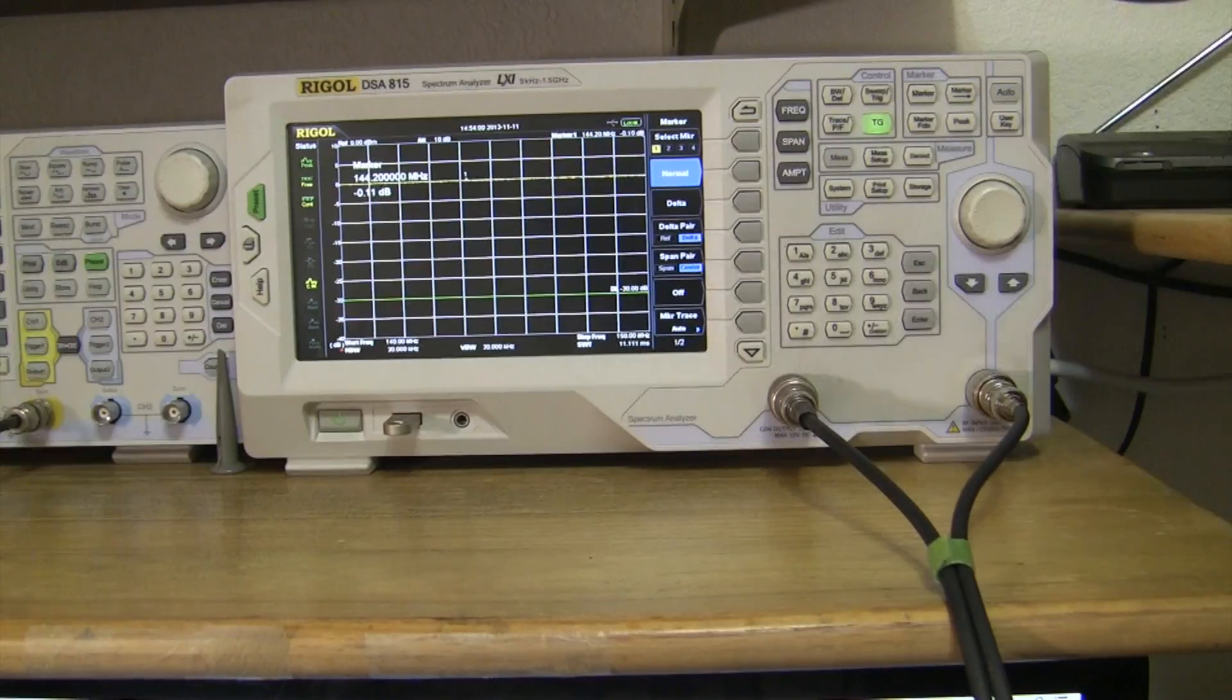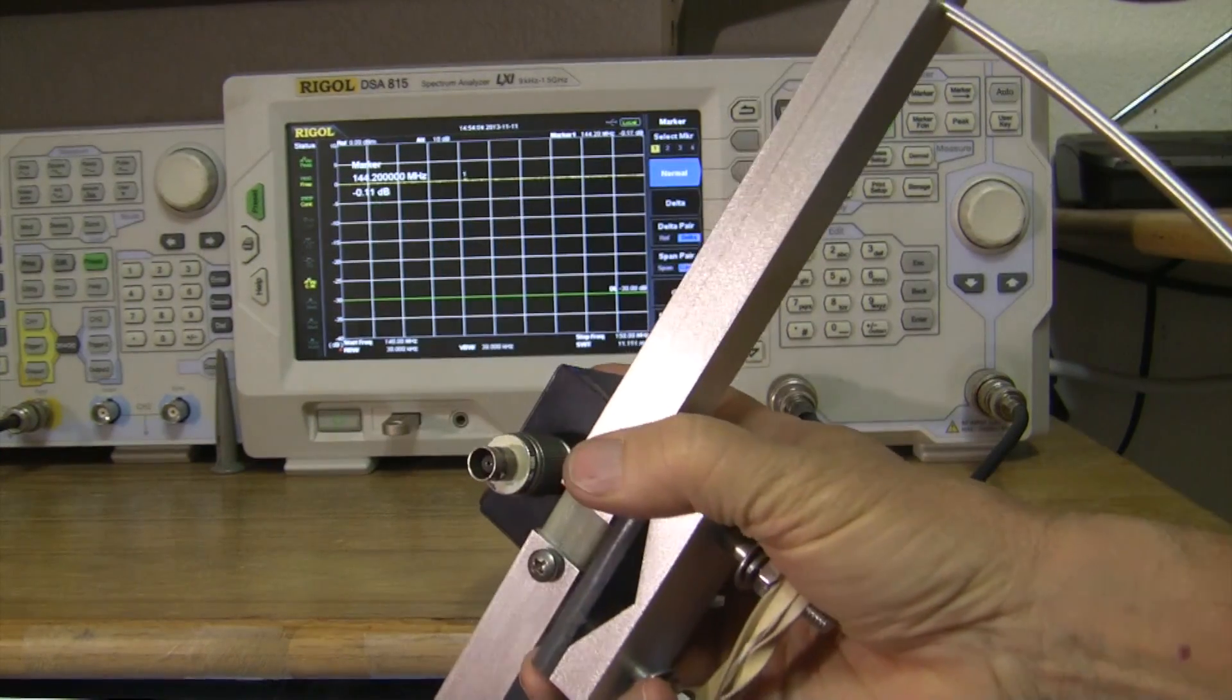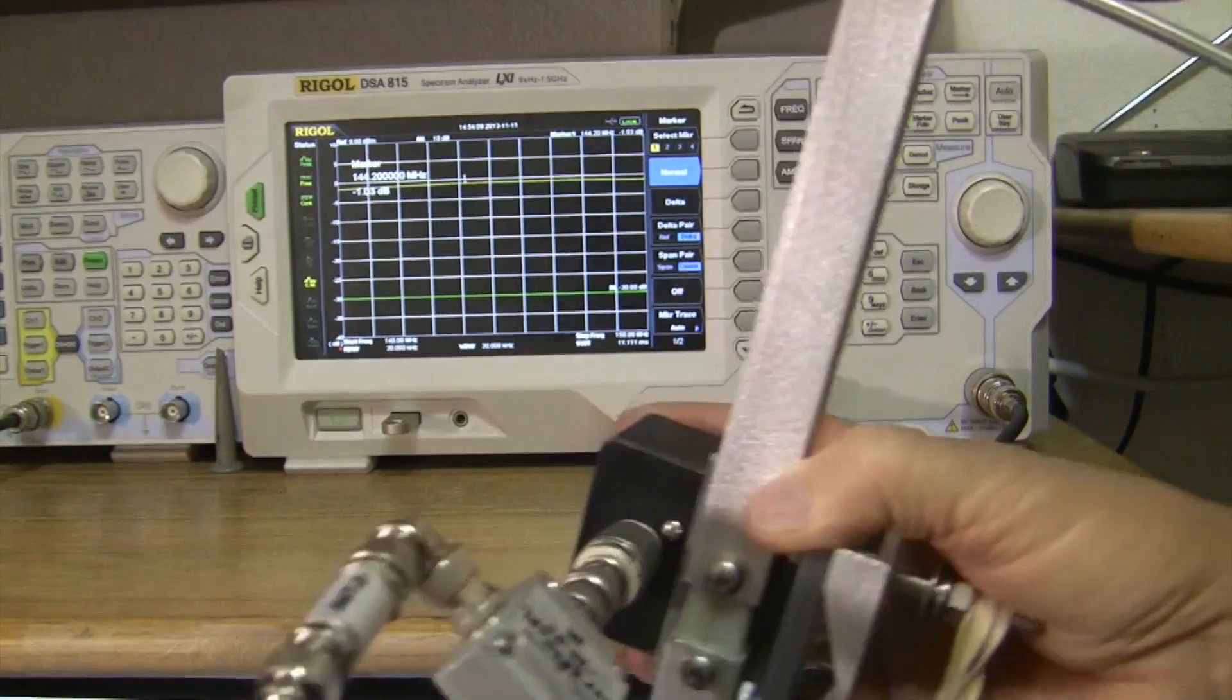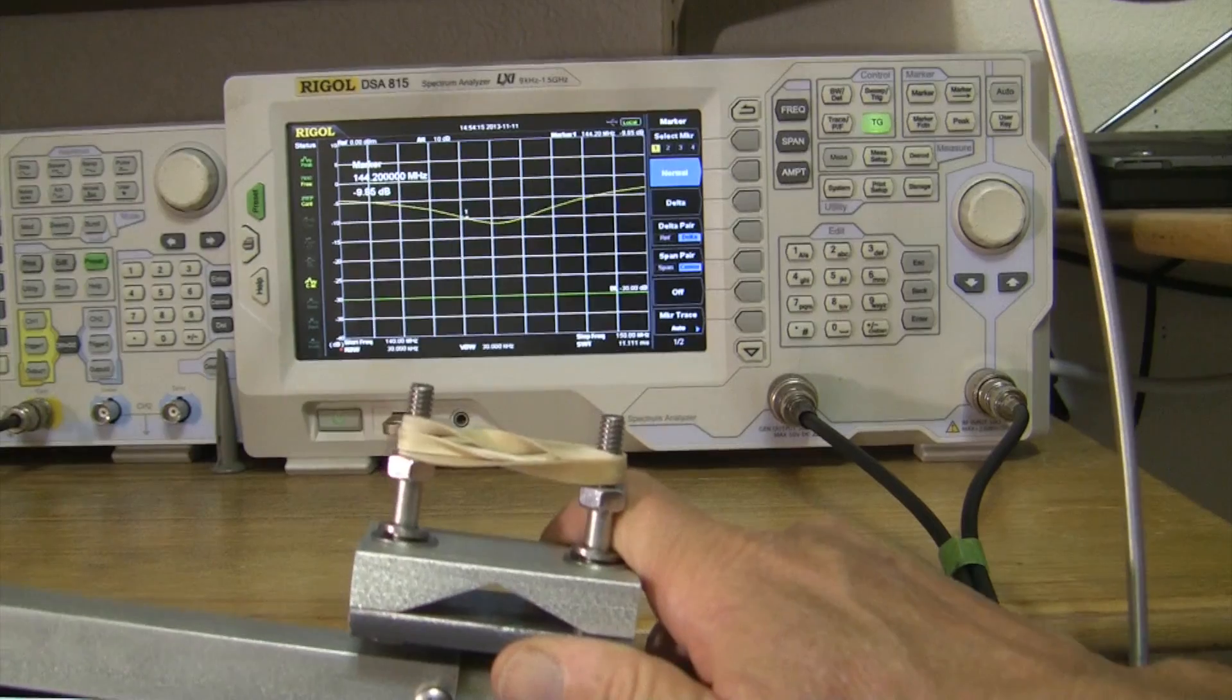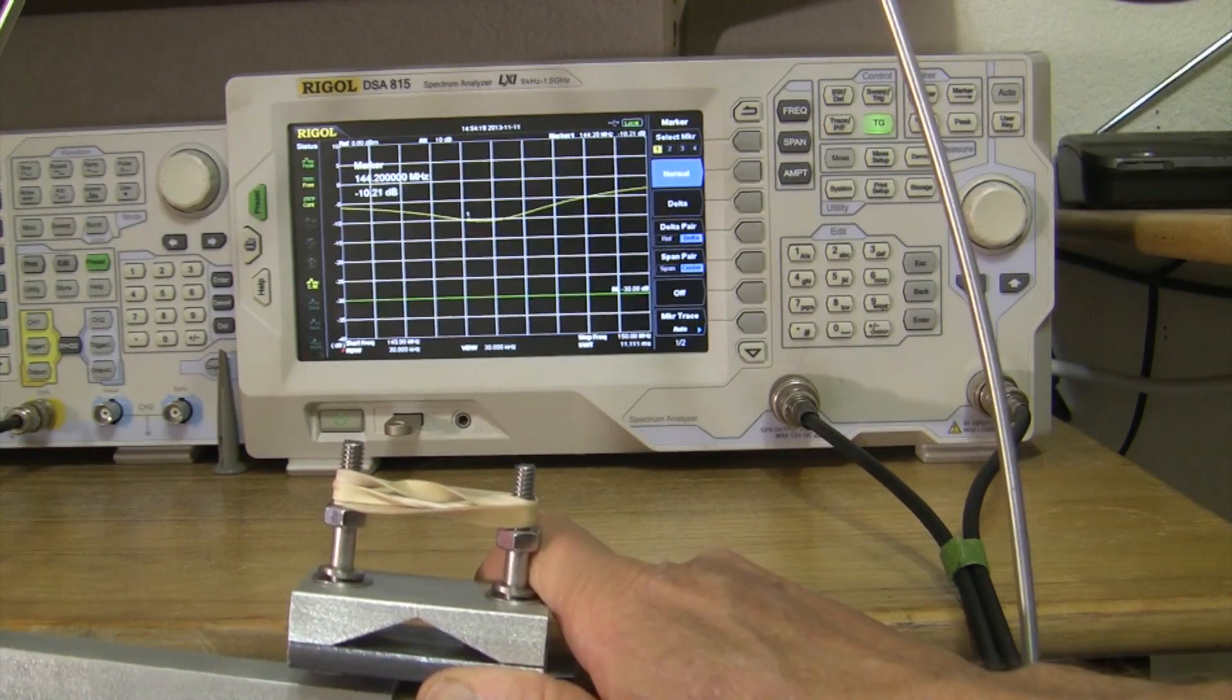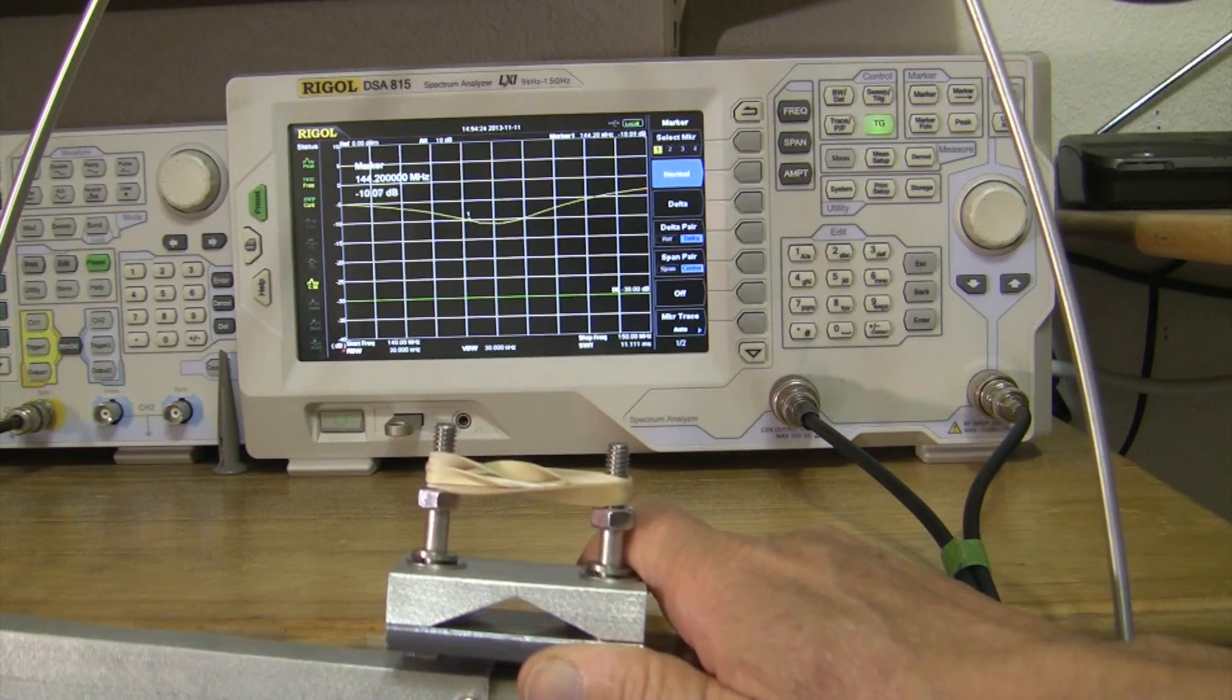I put an adapter on here and we'll just plug this thing on. So we are looking at what this antenna itself is doing. And as you see at 144.200, which is where I put the marker, this antenna is doing about 9 dB, but I'm also very close to stuff.